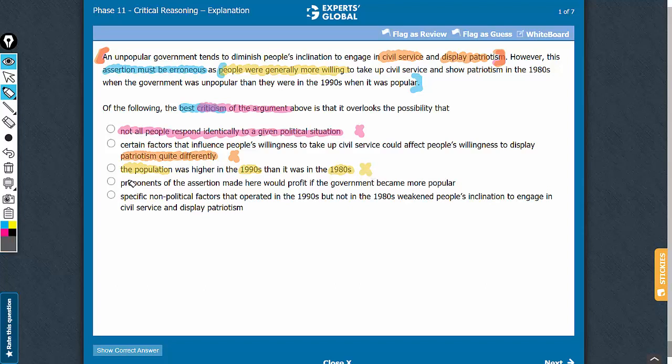Answer choice D talks about the proponents of the assertion profiting if the government became more popular. Many problems with this answer choice: why the proponents of the assertion are the proponents is out of the context of the argument. Whether they would benefit if the government became more popular is also out of context.